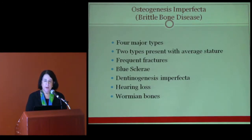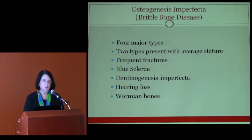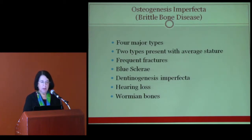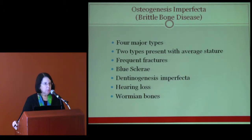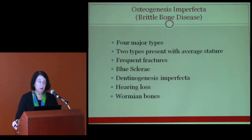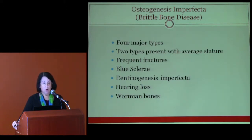Osteogenesis imperfecta, or brittle bone disease, has four major types, and two of these present with average stature, so we cannot preclude it by the absence of short stature. Typically patients present with frequent fractures and strikingly blue sclerae. Dentinogenesis imperfecta is another feature — the enamel of the teeth is often very thin. They also present with hearing loss and Wormian bones.